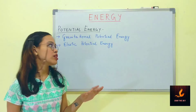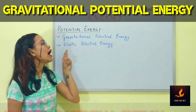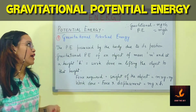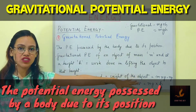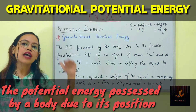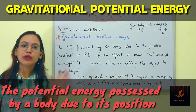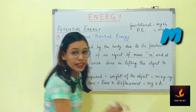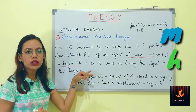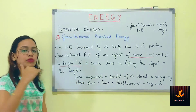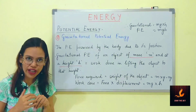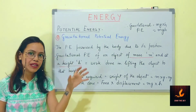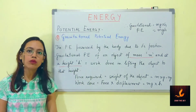There are two forms of potential energy: gravitational potential energy and elastic potential energy. Gravitational potential energy is the potential energy possessed by a body due to its position — any object placed at a certain height from the ground possesses gravitational potential energy. An object with mass m placed at height h will have gravitational potential energy equal to the work done in lifting it to that height.